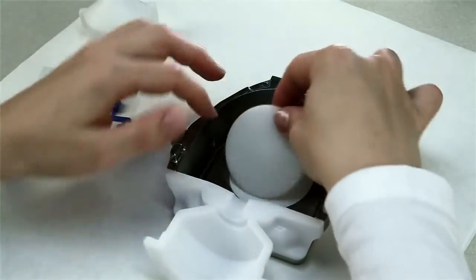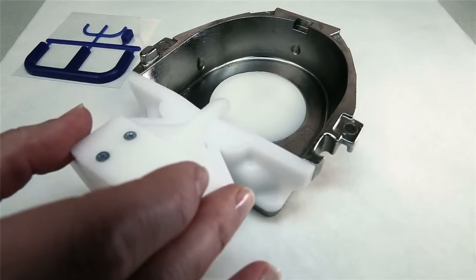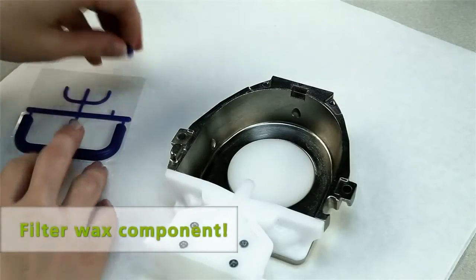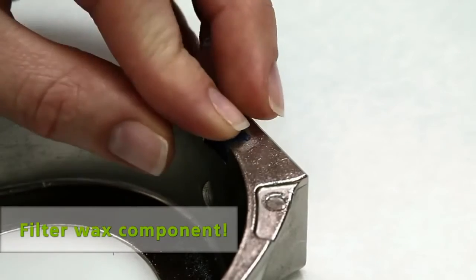Now place the flask lid, the excess former half and, very important, the filter wax component in the recess intended for that purpose.